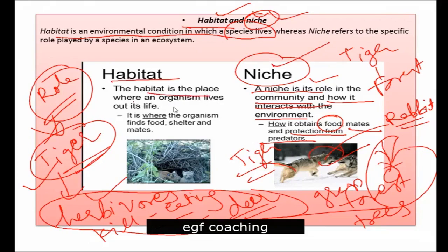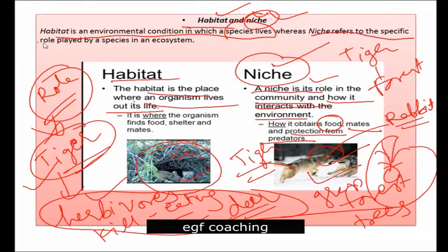Habitat is the place where an organism lives out its life. For example, this nest-type environment is where these living beings are living — so this is their habitat. And niche means what is the organism's role in its ecosystem. A niche refers to the specific role played by a species in an ecosystem.